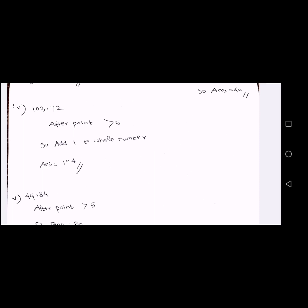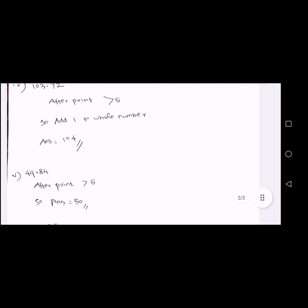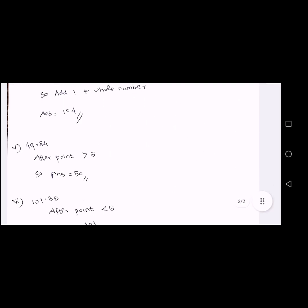Next sum: 49.84. After the point, the digit is 8. 8 is greater than 5, so we add 1 to the whole number. 49 plus 1 equals 50. Answer is 50.